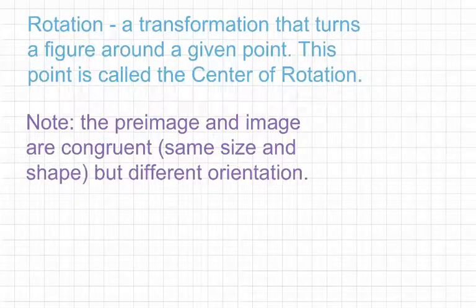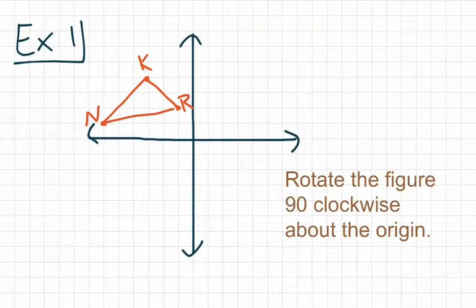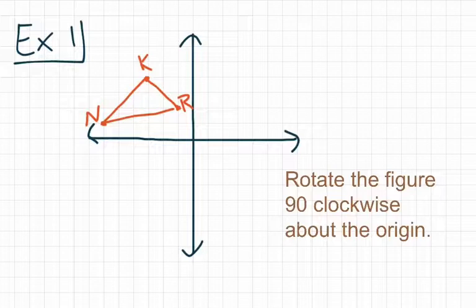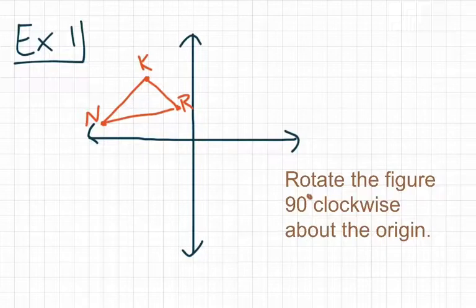Let's go ahead and take a look at a few examples. For our first example, we have triangle KRN, and our directions tell us to rotate the figure 90 degrees clockwise about the origin. What I want you to do is take a moment, pause the video, copy down the graph, and then resume the video for some further instructions.